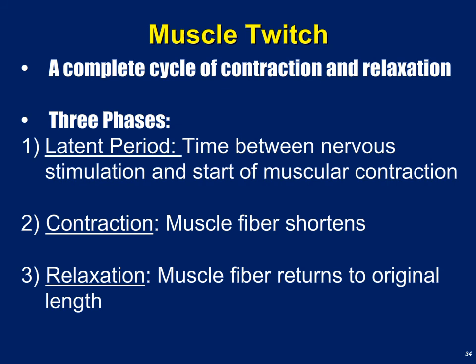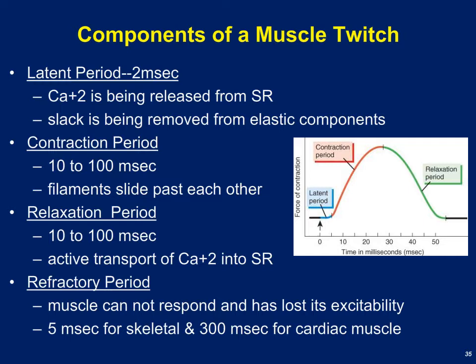Now that we know about the physiology of muscle fiber contraction, we're going to study how that contraction is used to do useful work. We need to understand something called a muscle twitch — a complete cycle of contraction and relaxation of an individual muscle or muscle fiber. There are three phases to muscle twitch: the latent period, which is the time between nervous stimulation and the start of muscular contraction; the actual period of contraction in which the muscle fiber is shortening; and then the period of relaxation when the muscle fiber relaxes and returns to its original length.